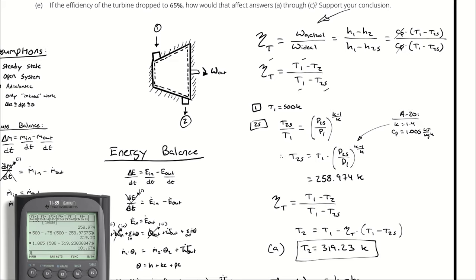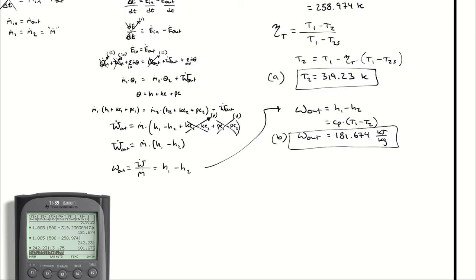The ideal work would be 1.005 times T1 minus T2S, so I could take 500 minus 258.974, multiply that by 1.005, and I get 242.231 kilojoules per kilogram, and multiply that number by 0.75, I get the actual work, which is 181.673. Potato, potato.